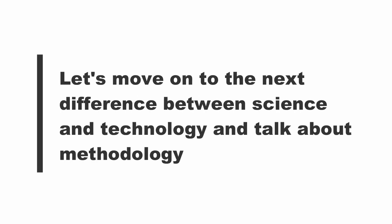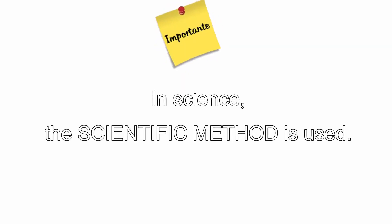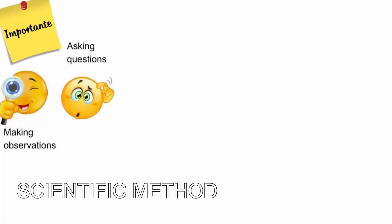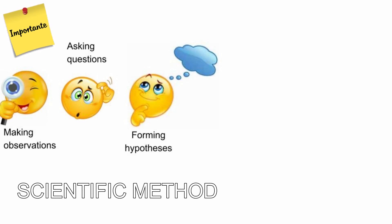Let's move on to the next difference between science and technology and talk about methodology. In science, the scientific method is used. The scientific method is a process based on making observations, asking questions, and forming hypotheses about what and why something occurs.